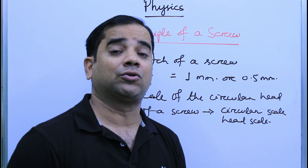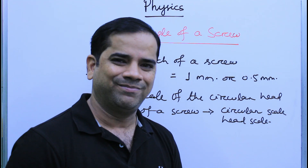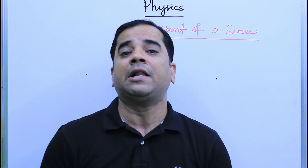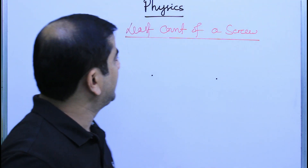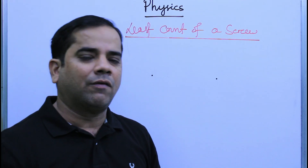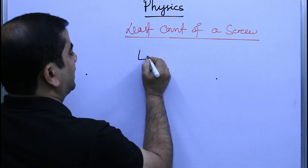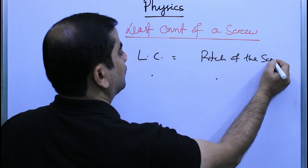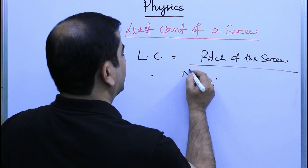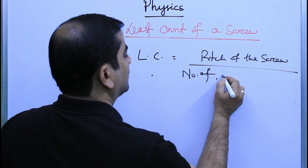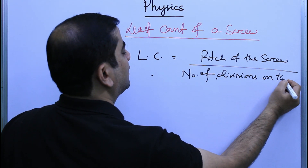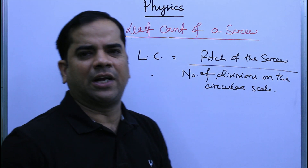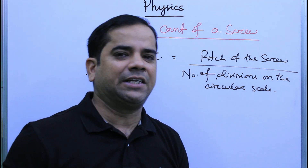Now let us discuss the least count of a screw. In our earlier classes we have already discussed least count — it is the least possible value of a measurement. In the case of a screw, the least count is equal to the pitch of the screw divided by the number of divisions on the circular scale.